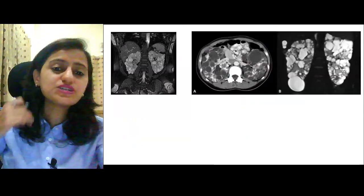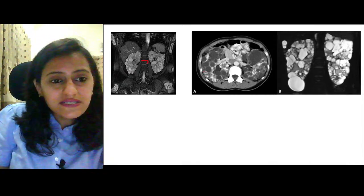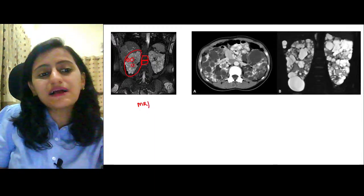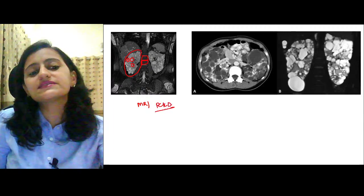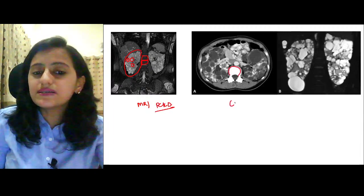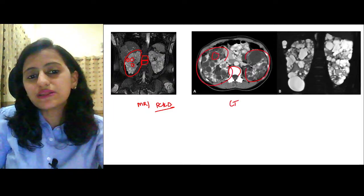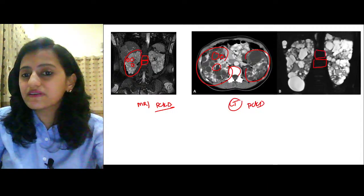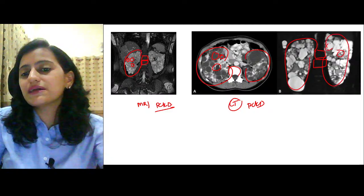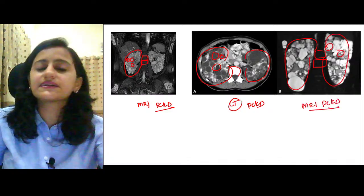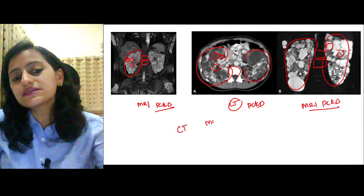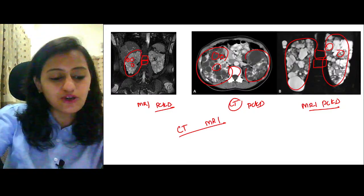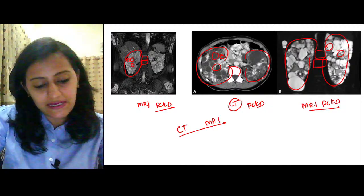Last FMG exam: CT vs. MRI identification. Black bone = MRI. Enlarged kidneys with multiple cysts on MRI = polycystic kidney disease. White bone CT also showing enlarged kidneys with multiple cysts = polycystic kidney disease on CT. CT vs. MRI identification has been tested many times in previous FMG exams.